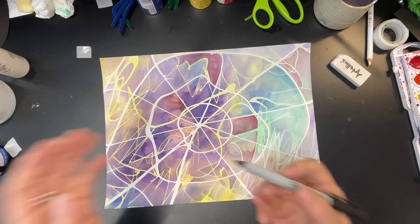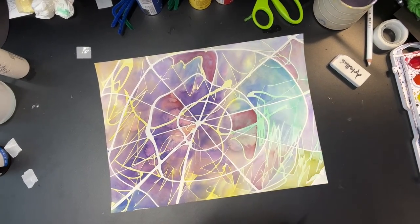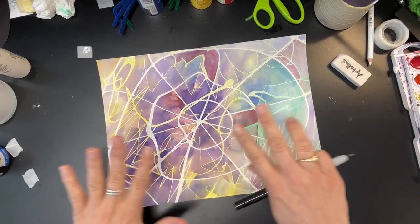It is time for Sharpie. We are going to outline just the spiderweb, not the other squiggles. So just the white parts.